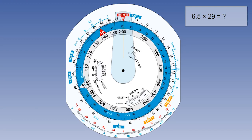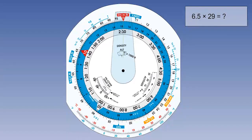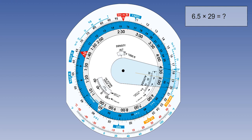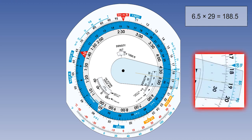Set the 10 index on the inner scale against 6.5 on the outer scale, and read off the answer on the outer scale opposite 29 on the inner scale. The correct answer is 188.5. Note that using the cursor can sometimes help you to read the answer more precisely.